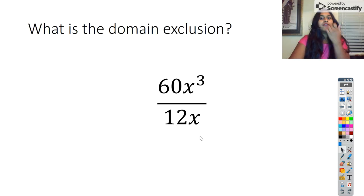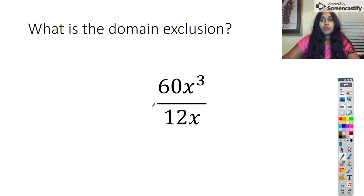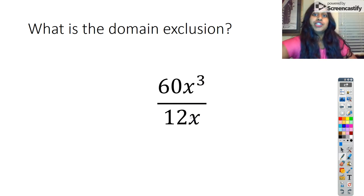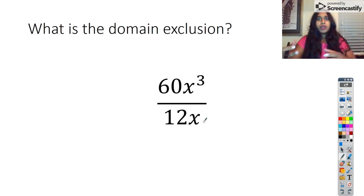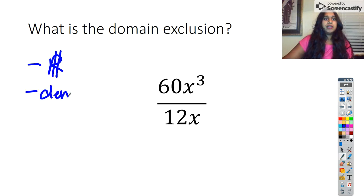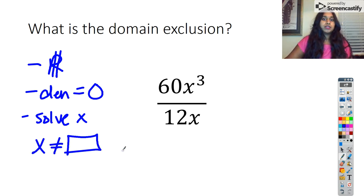Let's go ahead and start our first one. Our first one asked for the domain exclusion. What is a domain exclusion? That's a domain restriction — where can this rational not exist in the domain? The first thing about domains is that we always assume all reals. The only difference here is that we have a rational expression, meaning we have a fraction with a denominator that could potentially equal zero. That's where our domain exclusion exists.